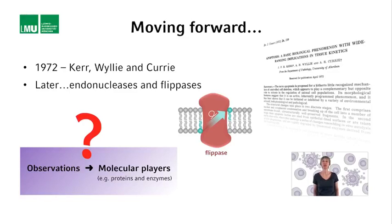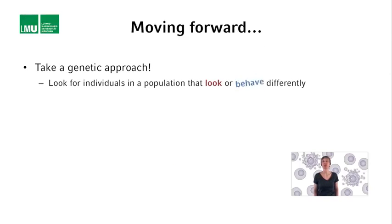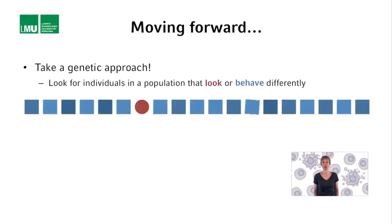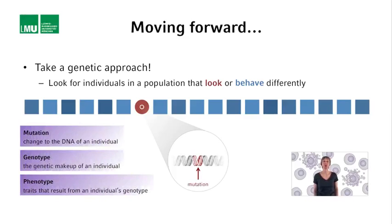One powerful classical approach is a genetic approach. This approach involves the identification of individuals within a population that look or behave differently than the rest of the population. Most of the time, such differences in traits or phenotype, as the geneticist refers to them, are caused by a single or a few changes to the DNA of that individual. These changes are often called mutations.